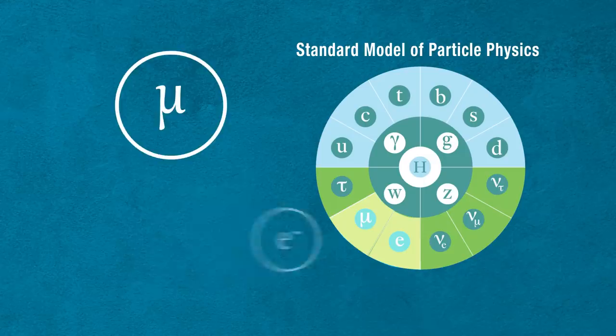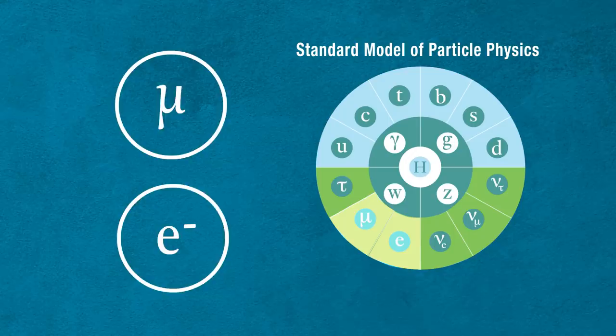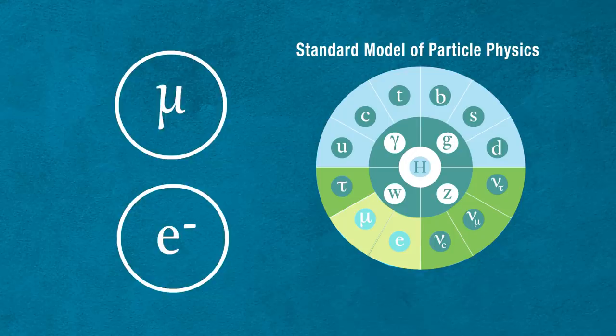But first, what exactly is a muon? A muon can be thought of as a heavier cousin of an electron. It's about 200 times more massive and has many of the same properties that an electron has, except that because it's heavier, it can also decay. In general, it takes about 2 microseconds, and then it decays into an electron.